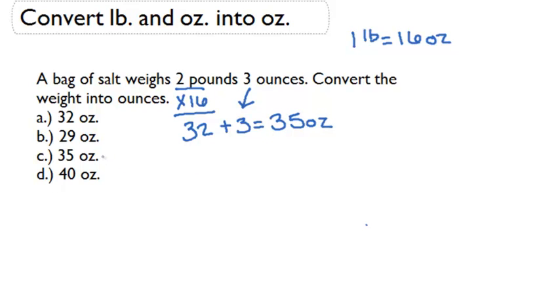Now let's check our answers to see if there's one that matches. C says 35 ounces, so that's the one that we're going to select.